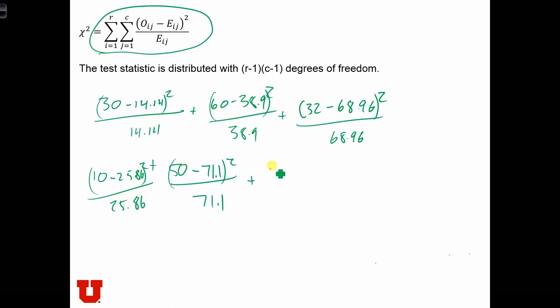And then the last column in the last row, 163 minus 126.04 squared over 126.04. So we are going to do all of the calculations and find that this gives us a chi-squared of 75.85.